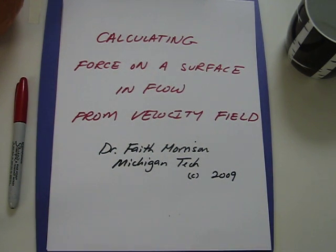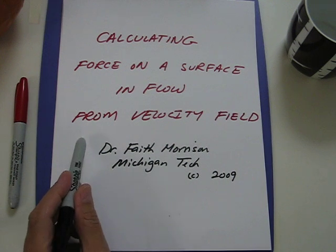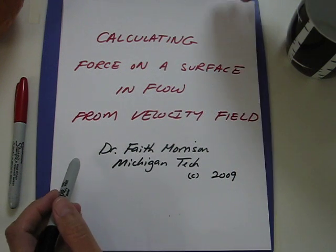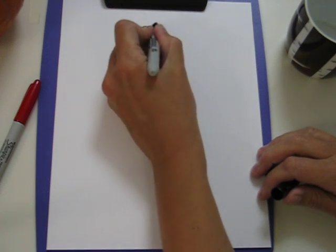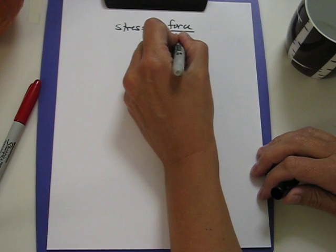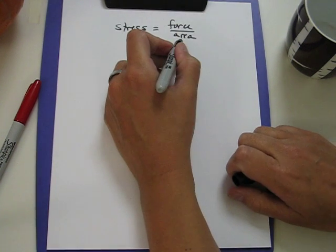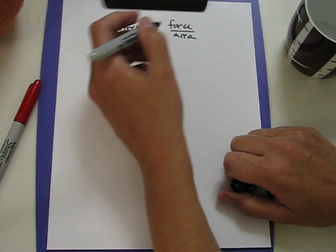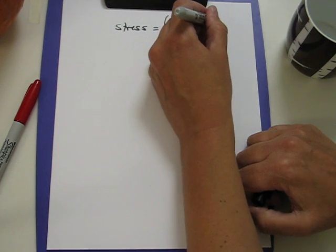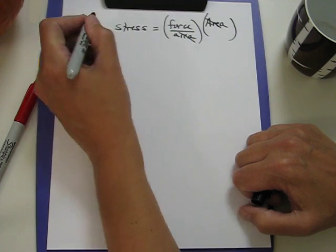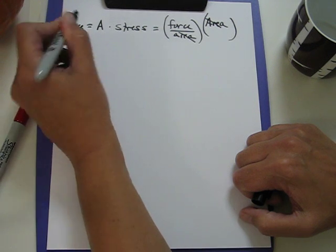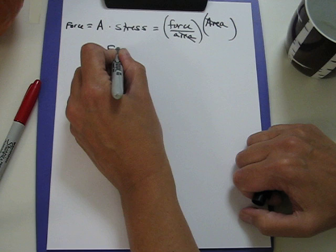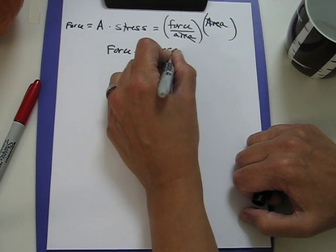I'd like to explain how to calculate the force on a surface in a flow from the velocity field. We calculate forces in fluids from expressions for stress. Stress is force per unit area. So if the stress on a surface is uniform across the surface, we can multiply this by area and we end up with the force. Force equals stress times area.